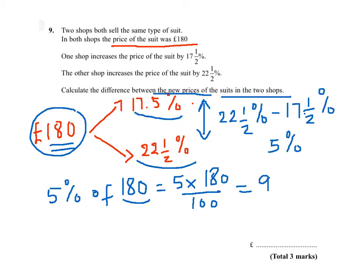And this is the difference between the new prices — that's £9. There are so many different ways to work out this question. Another way is working out 17.5% of 180 and 22.5% of 180 and finding the difference afterwards, but this is quite a long route. This is my preferred method.